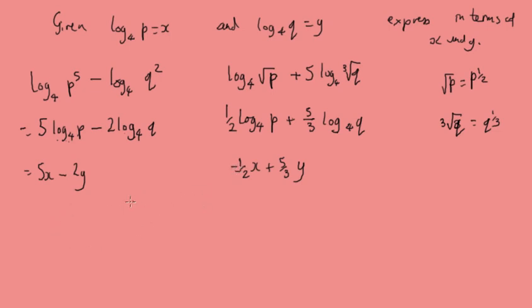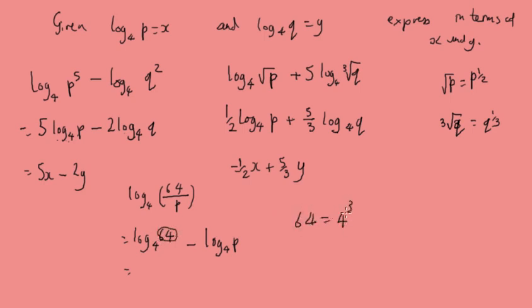And finally, log base 4 of 64 over p. Using the division law, that becomes log base 4 of 64 minus log base 4 of p. Now 64 is the same as 4 cubed, so log base 4 of 4 cubed is just 3. And log base 4 of p is x. So the answer is 3 minus x. I hope that makes sense.